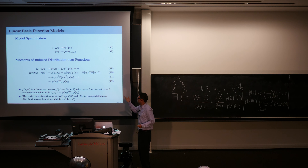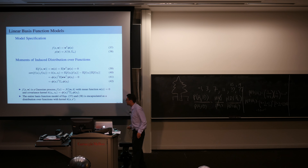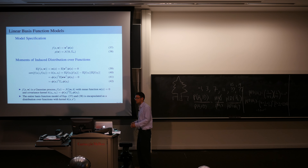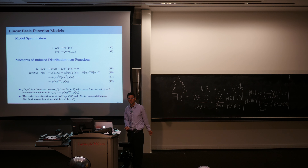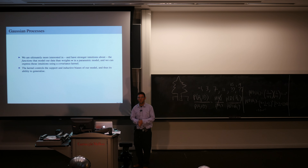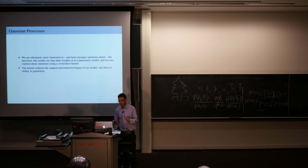Formally, a Gaussian process is defined as a collection of random variables, any finite number of which have a joint Gaussian distribution. We write f ~ GP(m, k) to mean any collection of function values has a joint Gaussian distribution with mean vector μ and covariance matrix K built from the mean function and covariance kernel. We can derive the covariance kernel of a linear basis function model with a Gaussian prior over parameters — the covariance kernel looks like an inner product of basis functions evaluated at a pair of inputs. The kernel controls the support and inductive biases of our model and therefore its ability to generalize.